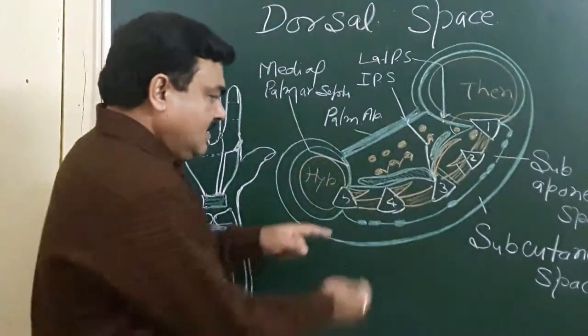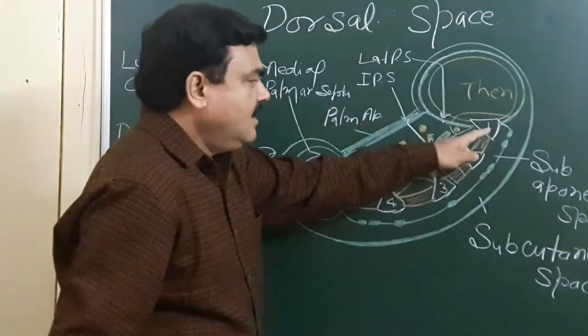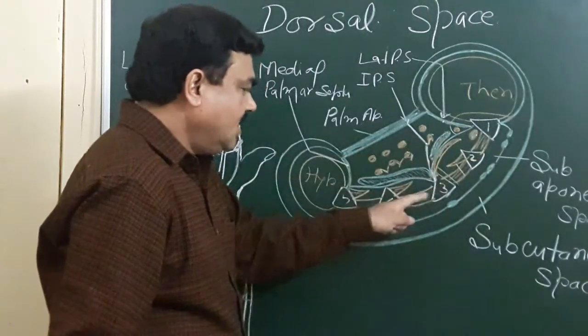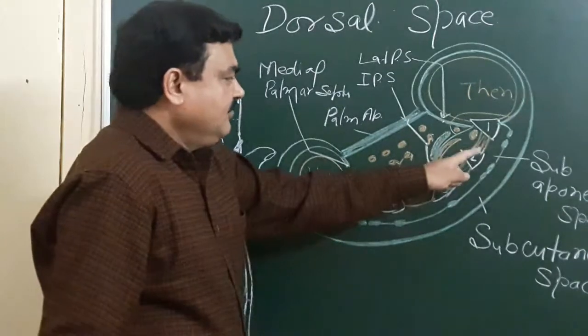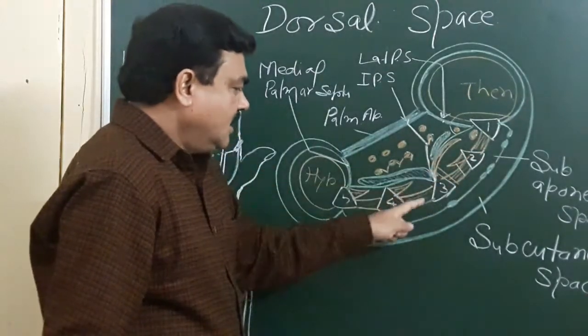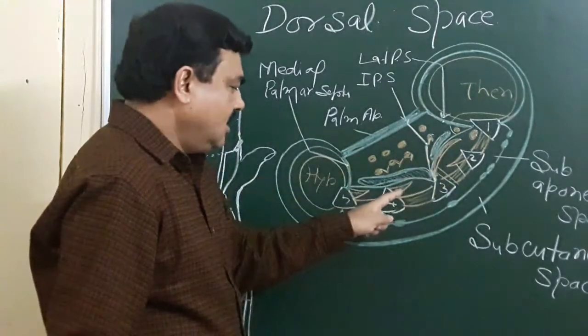The anterior boundary of this space is formed by the 1st, 2nd, 3rd, 4th, and 5th metacarpals, and the 1st, 2nd, 3rd, and 4th dorsal and palmar interossei.